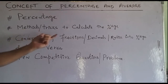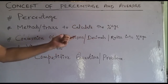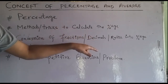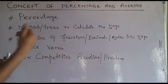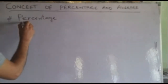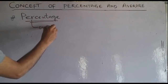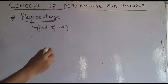We will cover conversion of fractions, decimals, and ratios into percentage and vice versa. If there are fractions, decimals, and ratios, they can be converted as percentages. The concept of percentage means percent goes out of 100 — this is a comparison with respect to 100.